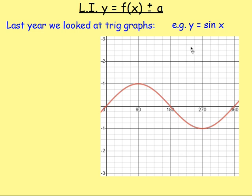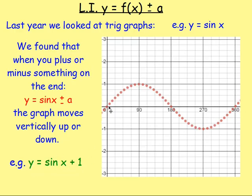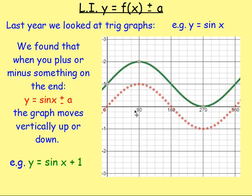The first transformation is y equals f of x plus or minus a. Let's take a basic sine graph, y equals sine x. If I asked you to graph y equals sine x plus one, or y equals sine x minus two, the plus or minus on the end moves the graph vertically up or down. For y equals sine x plus one, every single point moves up one place — so instead of zero zero, that point moves up one; instead of 90 one, that moves up one too. The y values increase by one.